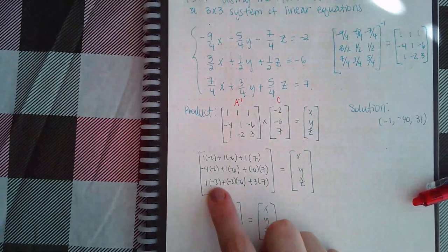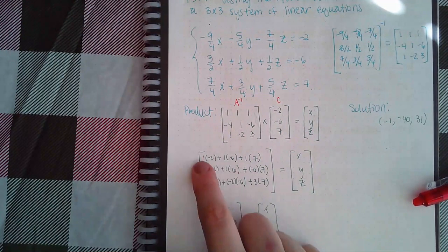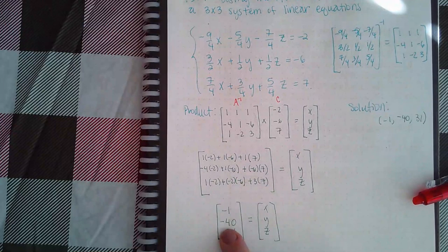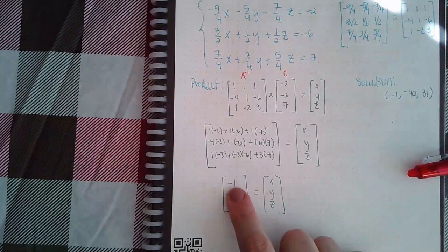Row 2 times column: negative 4 times negative 2, 1 times negative 6, negative 6 times 7. And then one last row and the column: 1 times negative 2, negative 2 times negative 6, and 3 times 7.